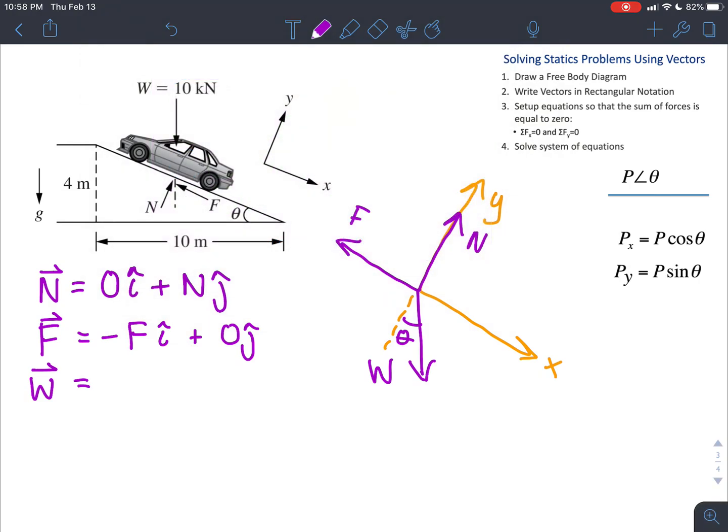So our i hat is going to be W sine theta i hat. And that is positive, because it's going that way. And then our y component is negative going that way. So we say minus W cosine theta j hat.